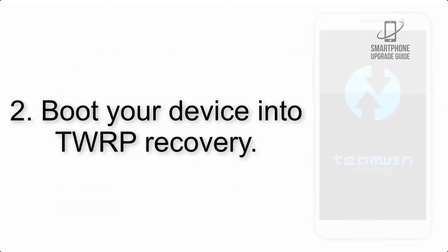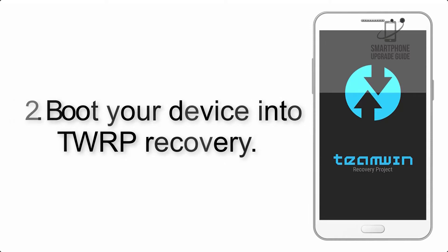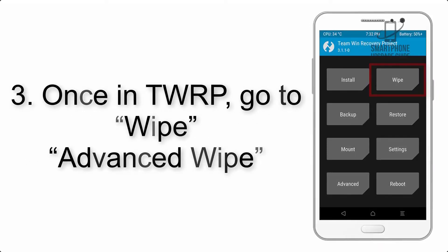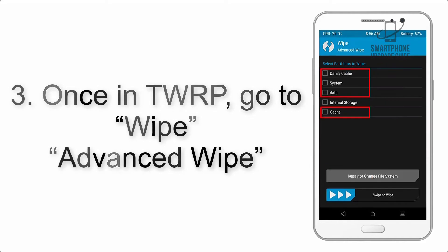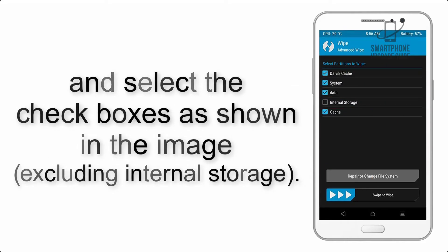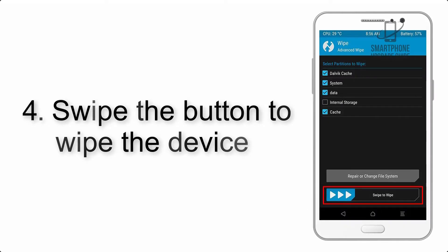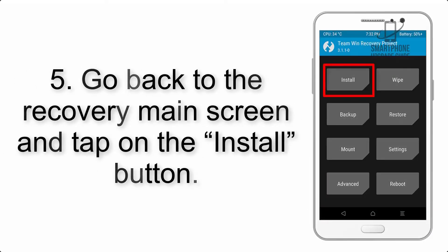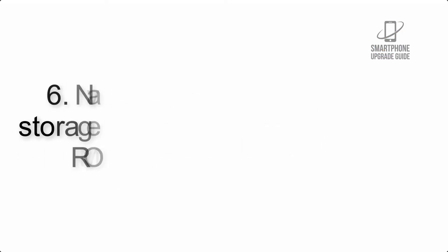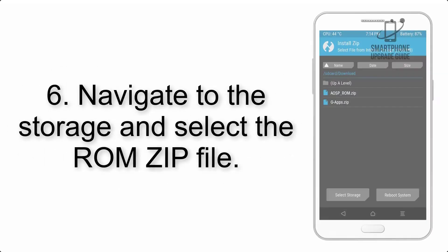Step 2: Boot your device into TWRP recovery. Once in TWRP, click on Advanced Wipe and select the checkboxes as shown in the image, excluding internal storage. Step 4: Swipe the button to wipe the device.